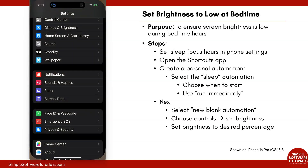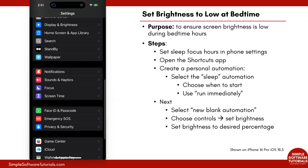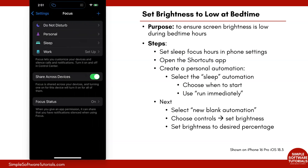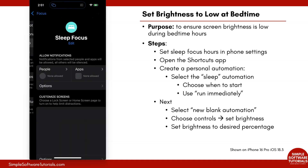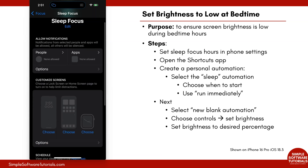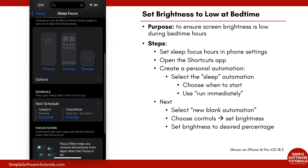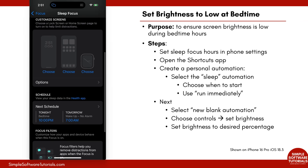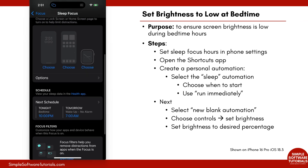That is in your settings. If you go into your general settings on your phone, it will be found under Focus. Open up Focus and then select Sleep — you can set your sleep focus there and select the schedule for when it's going to run. I have mine set from 10 PM to 7 AM. This shortcut will make sure your phone doesn't blind you by being super bright during these hours.